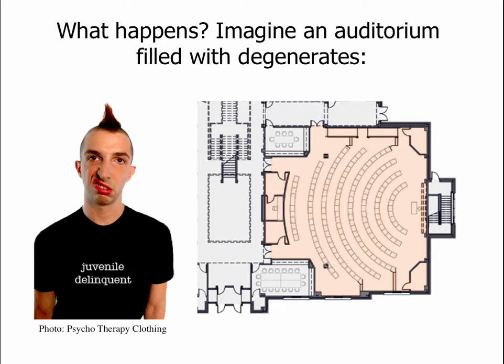So what happens as a white dwarf gets close to this limit? Let's say that our 1.1 solar mass white dwarf has accreted 0.3 solar masses of material, so it's at this 1.4 solar mass limit. Well, we can use another analogy. Let's say we've got a university auditorium here for an exciting astronomy lecture, and we start filling it full of typical juvenile delinquents, such as on the left.